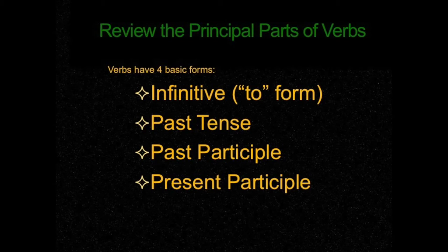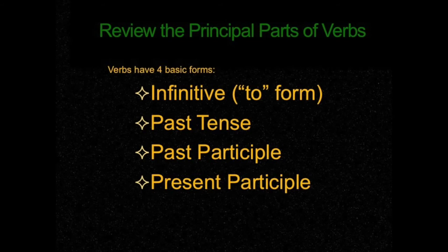Then you have the past tense form of the verb, which usually uses -ed, but sometimes is irregular. Next, you have the past participle form of the verb, which sometimes is the same as the past tense, using the -ed or an irregular form. Past participle is used with has, have, or had to make the perfect tenses.